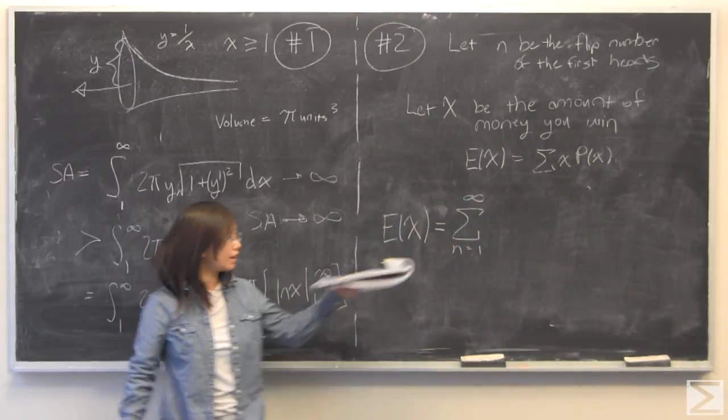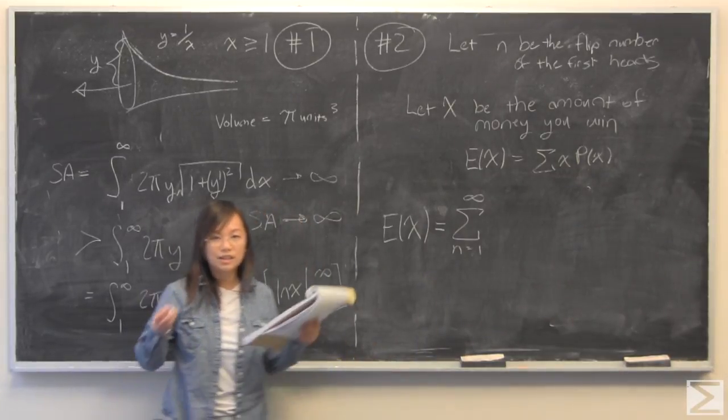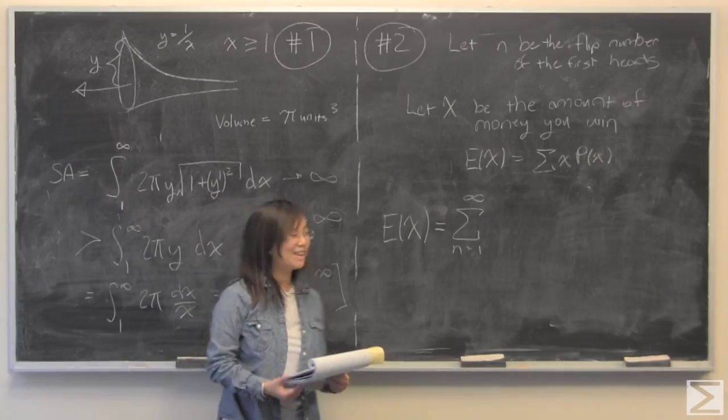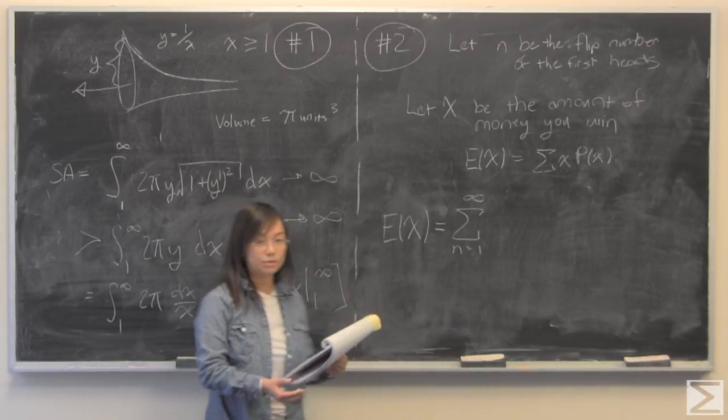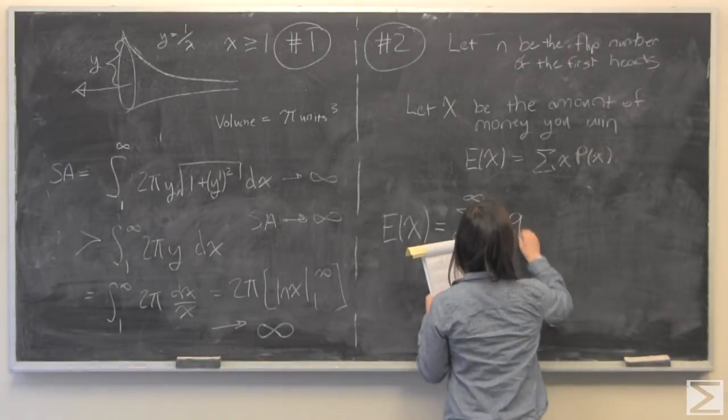So I have said that this sum is going to go from n equals one to infinity, because technically it is possible to get tails every single time until, well, infinity. So I'm going to let this go from n equals one to infinity. X times the probability of x.